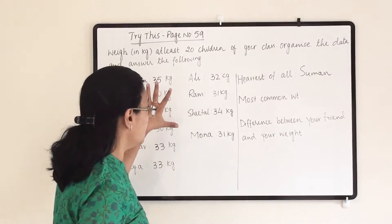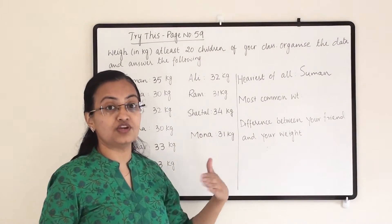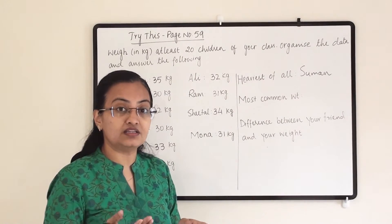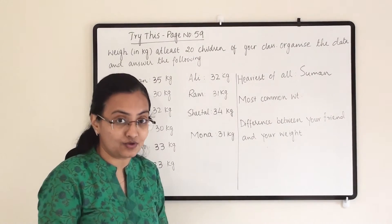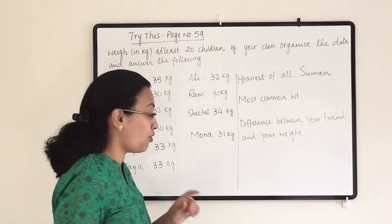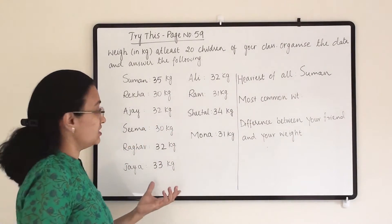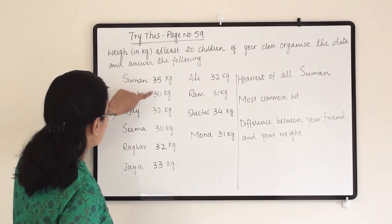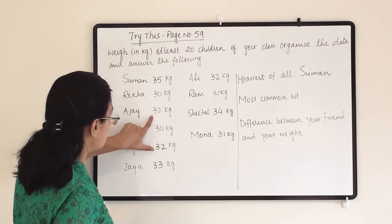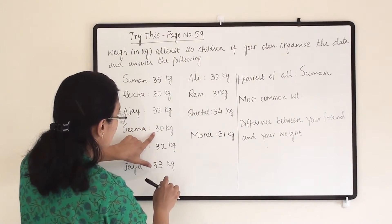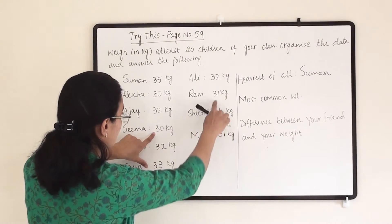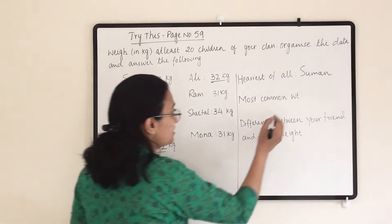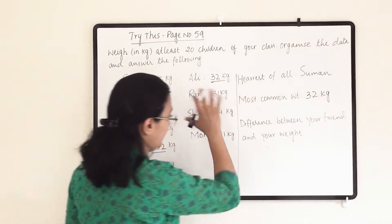The next question is about the most common weight — which observation is occurring most frequently. So checking here: 30 is appearing twice, 32 is appearing thrice, and 31 is appearing twice. Since 32 is appearing thrice in all this data, 32 is the most common weight among these 10 observations.